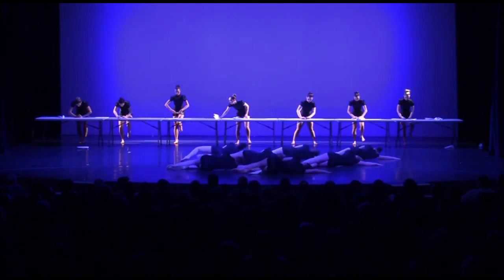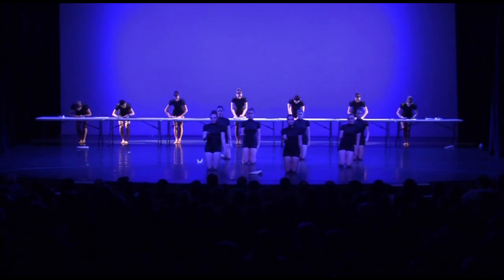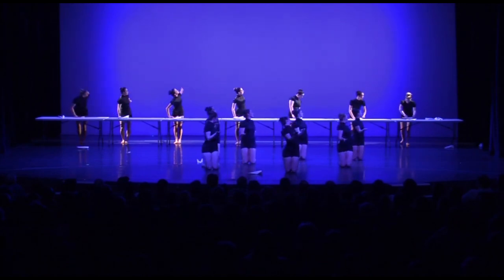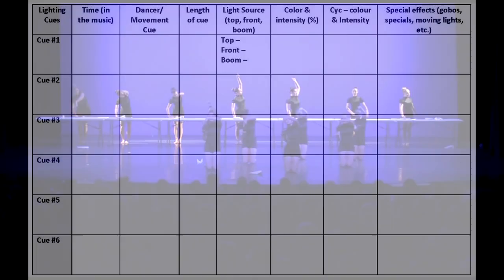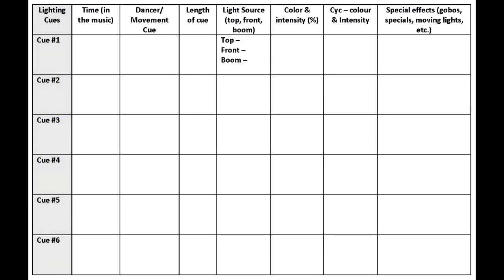When you are looking at the lighting design portion of the sheet, you should consider the following. Column number one is simply to number your cues. Our sheets have six rows. In many cases, you may have need for fewer than six cues to light your piece. Occasionally, you will need more than six cues. Feel free to add rows or delete them as you need.